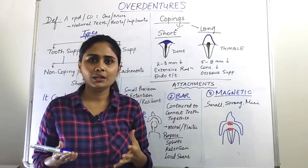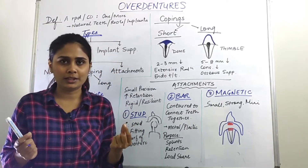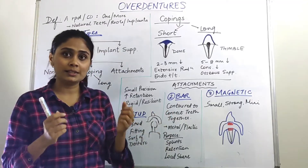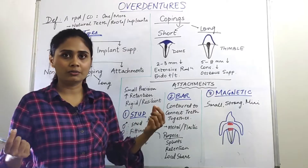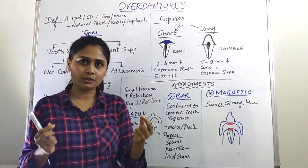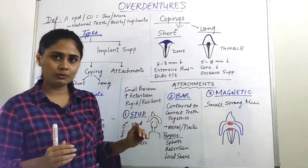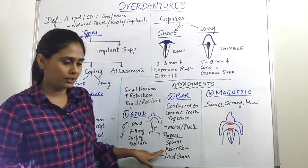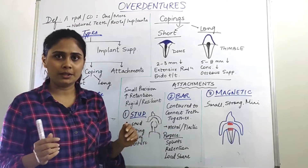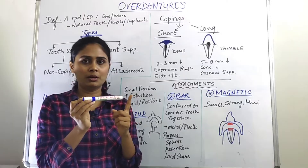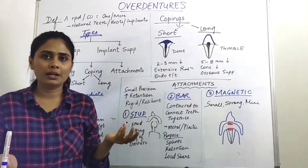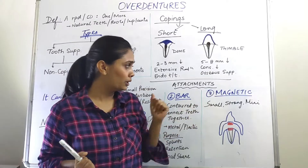Next is the bar type of attachment. We need a bar to splint our teeth. If the abutment teeth are a little weaker or have some mobility, we can still preserve them by putting a bar over them — connecting the teeth together. This helps share the load of the whole overdenture across two teeth and also increases retention. The bar attachment is like a bar connecting one abutment to another, over which the overdenture is fabricated. It can be made with metal or plastic.